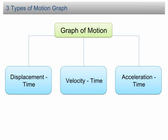All these graphs look similar. However, they are quite different in terms of how they describe the motion. For example, in a displacement time graph, the gradient is equal to the velocity, while in a velocity time graph, the gradient is equal to the acceleration.